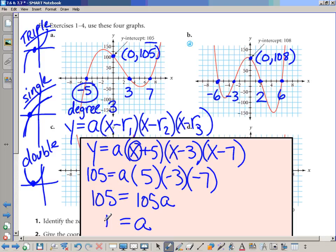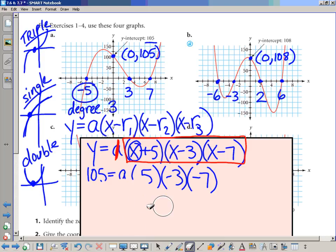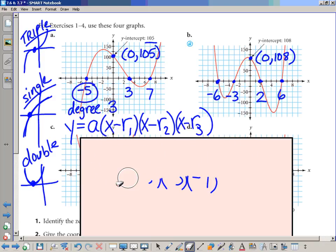There's no dilation, so the equation would simply be, and we'll put it in red so you can see it here. If A is one, then your equation is simply what you see here: (x + 5)(x - 3)(x - 7). Go ahead and graph that in your graphing calculator and confirm that it looks like this and confirm that you get the points that are on the graph. Trace it, make sure you get the right y-intercept, and so on.